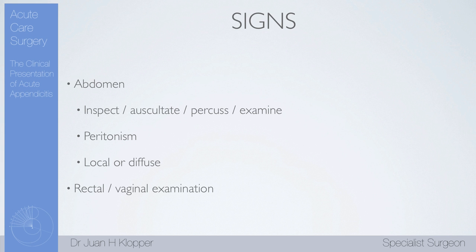Remember, it's not only peritonism we're looking for — we're also looking for other problems. Are there enlarged organs? Is there a mass in the area of the appendix? An appendix mass or even an appendix abscess should be treated differently from normal appendicitis. So we're looking for masses and enlarged organs. Remember, at this time we're not 100% sure that we are examining a patient with acute appendicitis, so be thorough in your examination.